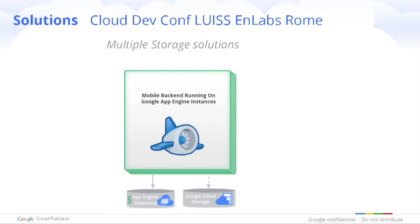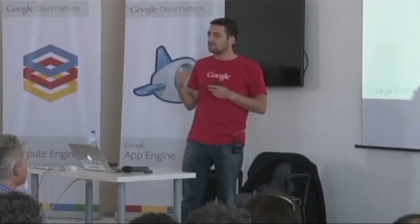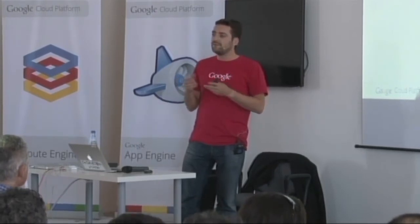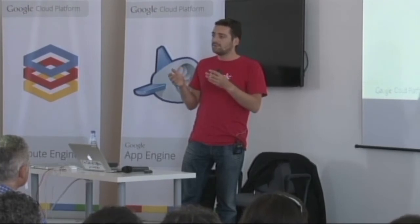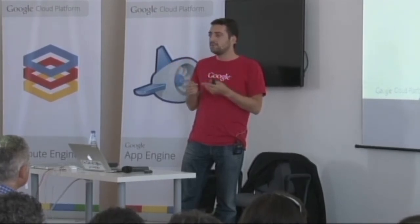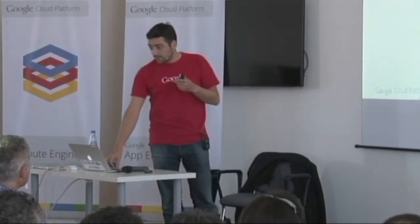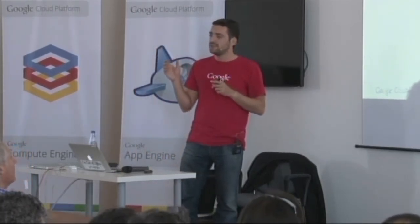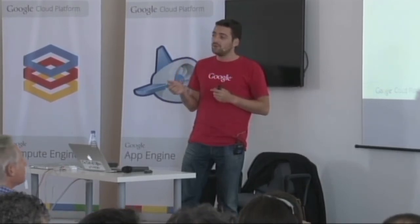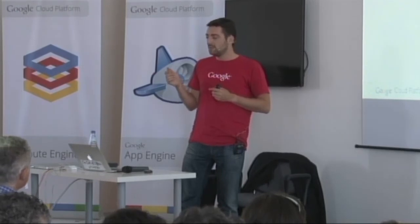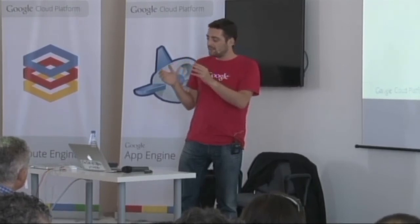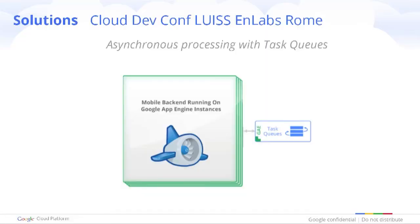We also have Google Cloud Storage, which is object storage, more like a file system — there will be a session on that this afternoon. There is also Cloud SQL, which is MySQL 5.5 managed in our cloud datacenters; you can access it using SQL queries and port 3306 from Compute Engine. And there is Persistent Disk — a network-mounted file system you can share across up to 16 machines, format yourself, and use to boot machines.